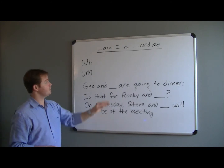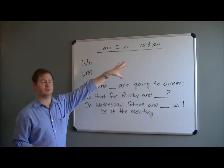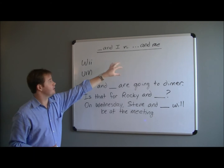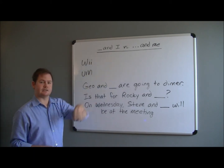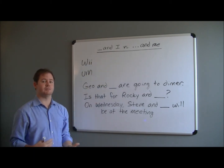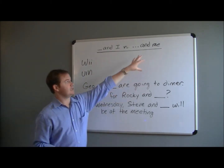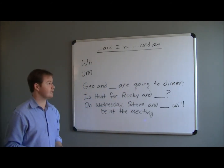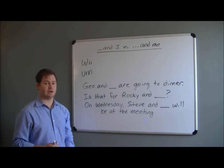There are certain situations where you use 'and I,' and there are certain situations where you use 'and me.' 'And I' in a sentence is going to be the subject of the sentence, while 'and me' means that 'me' is acting as an object.